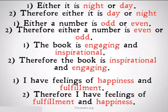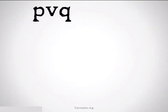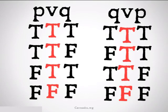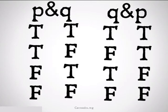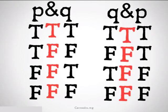Let's take a look at the truth tables. P or Q and Q or P — we fill in the truth tables below them and see that they match perfectly, the first three rows being true. We can also do P and Q and Q and P — we once again fill these in and see the truth tables match, with the first row being the only row that's true.